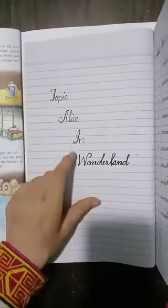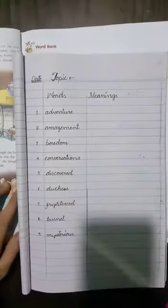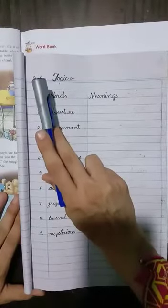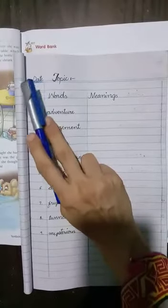Mention the title page. Topic: Alice in Wonderland. Don't forget to mention the date. Because you know very well that we also work in history, that date we will always mention. I have written here date.